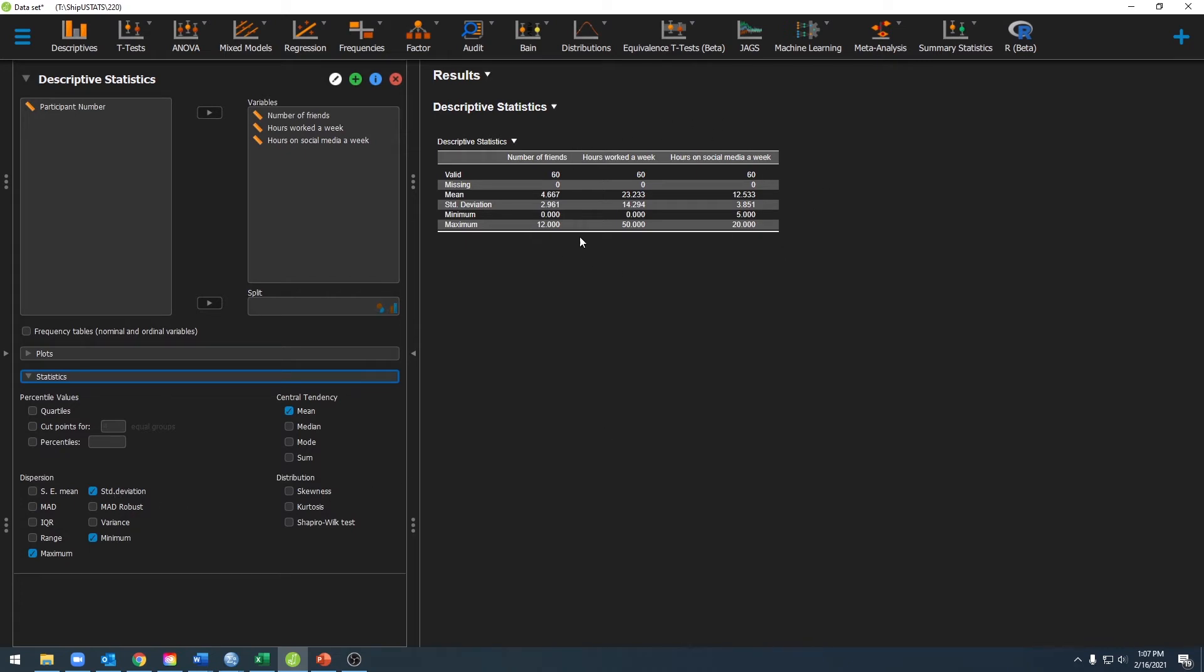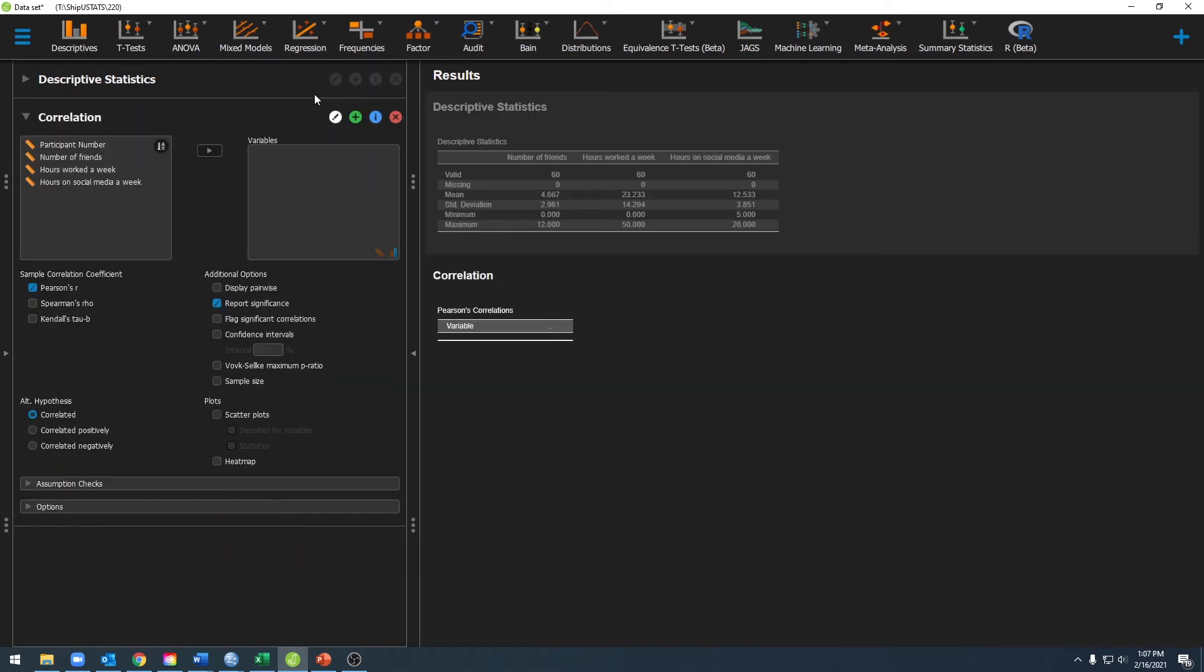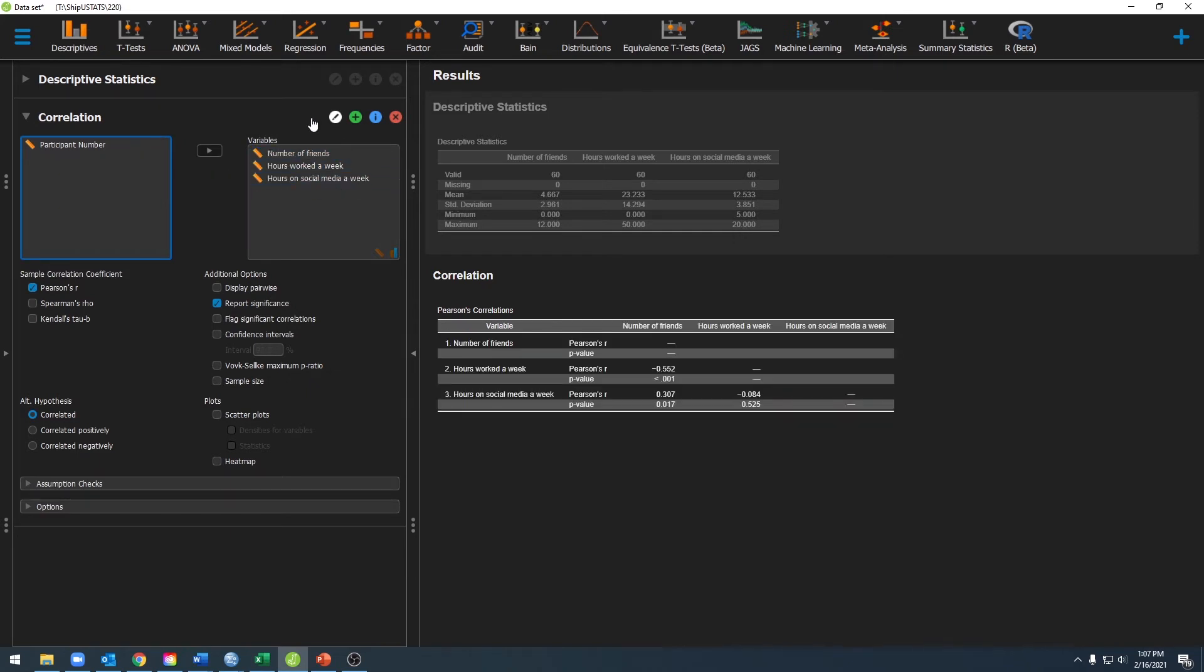Now that we have these descriptive statistics, we can go ahead and run our correlation. To do that, we're going to go ahead and click on regression, and then on correlation. Again, we're going to move over the variables that we want to correlate with each other. And once we've done that, you'll see that our answers are already over here. That's because Pearson R is selected by default. If it was not selected, go ahead and make sure you select it.